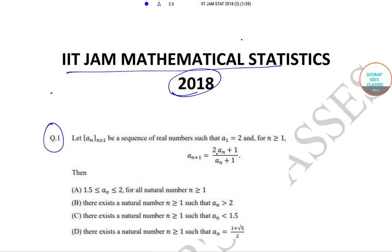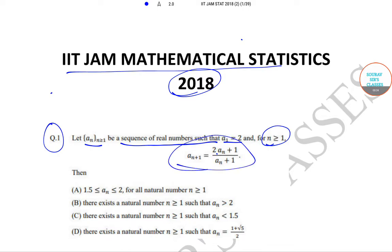In question number 1, it has been said that let {a_n}, where n is greater than or equal to 1, be a sequence of real numbers such that a_1 is equal to 2, and for n greater than or equal to 1, a_(n+1) is equal to twice of a_n plus 1 upon a_n plus 1. Option A states: 1.5 ≤ a_n ≤ 2 for all natural numbers n ≥ 1.